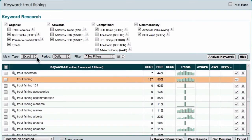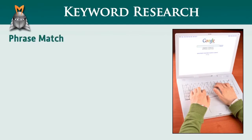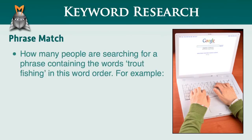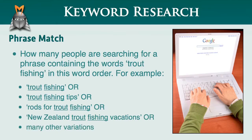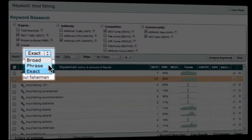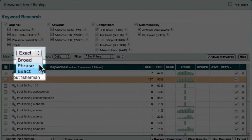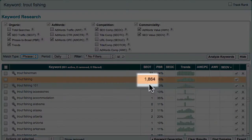Now let's consider what happens when we set the match type to phrase match. When we set the match type to phrase match, the SEO figure now relates to how many people are searching for a phrase containing the words trout fishing in this specific word order. For example, this would include people searching for phrases such as trout fishing, or trout fishing tips, or rods for trout fishing, or even New Zealand trout fishing vacations, and also many other variations. So when I set my match type to phrase match, I can see that considerably more people per day are searching for a phrase that contains the words trout fishing in that order along with some other keywords.